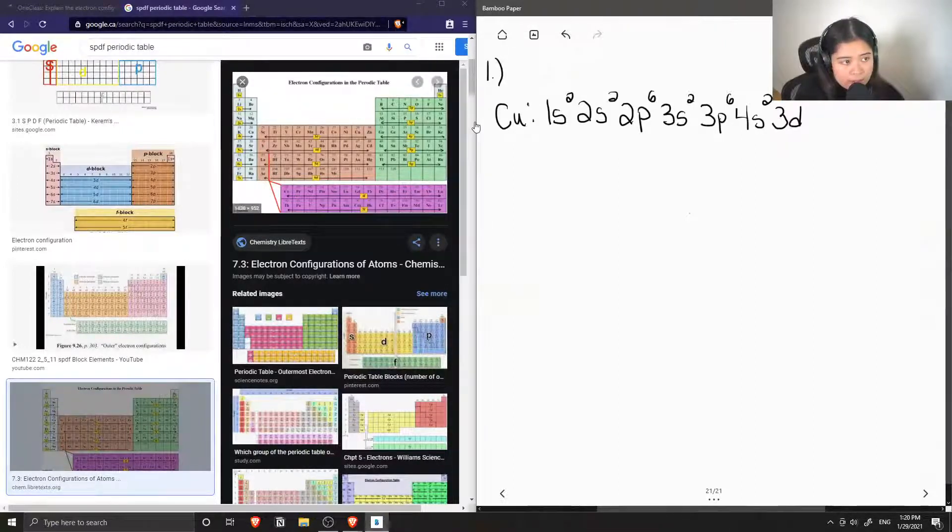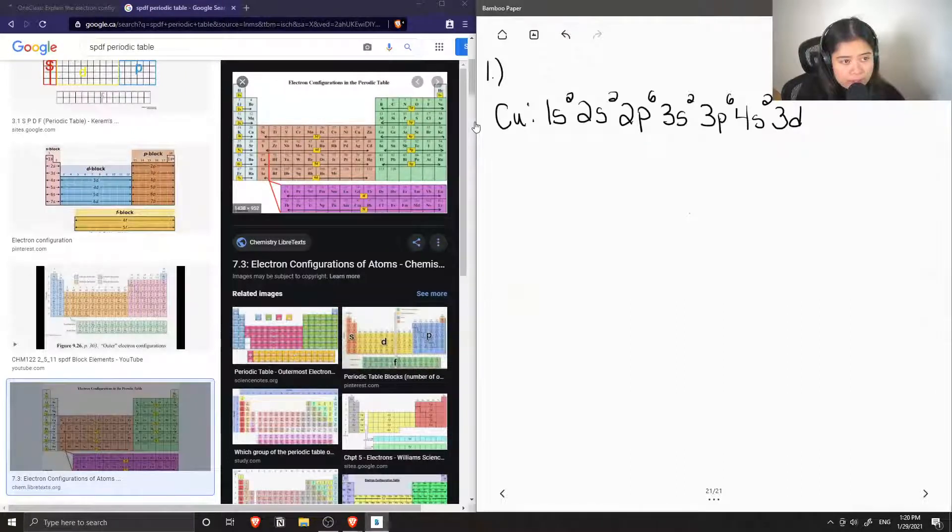And then count up all the electrons up to copper. So we count out 1, 2, 3, 4, 5, 6, 7, 8, 9.